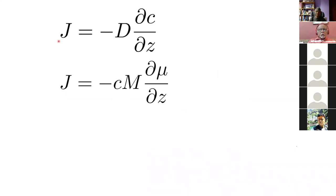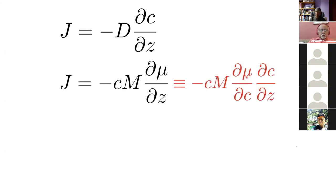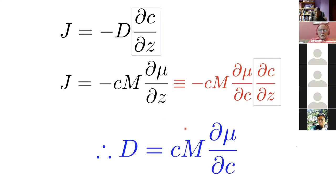We demonstrated this by writing a law where J is proportional to the gradient of chemical potential, and because this is per unit concentration we also multiply by concentration. Expanding this, we get J proportional to (dμ/dc)·(dc/dz) = dμ/dz, giving us an analogy where the diffusion coefficient is a function of how the chemical potential changes with concentration. M (or L) is called a mobility. In summary, diffusion is driven by a chemical potential gradient, not in general by a concentration gradient.